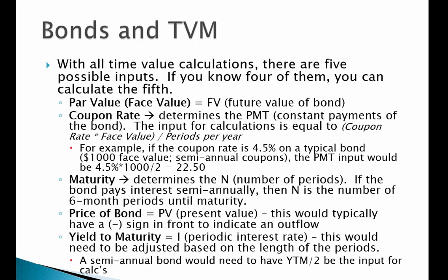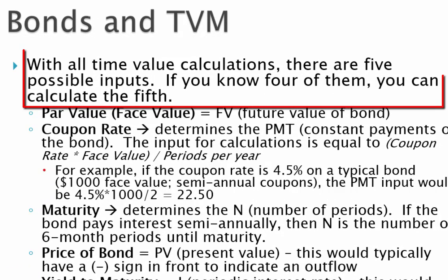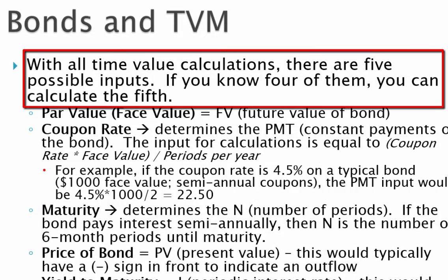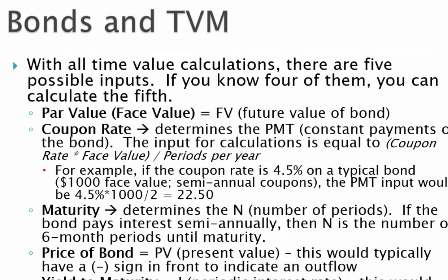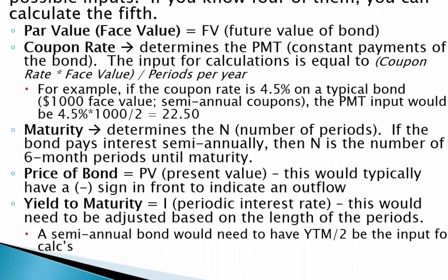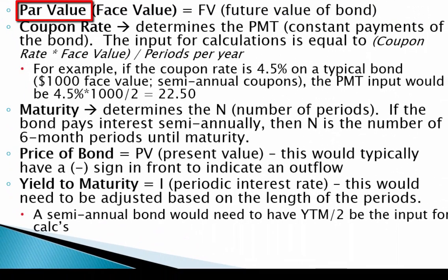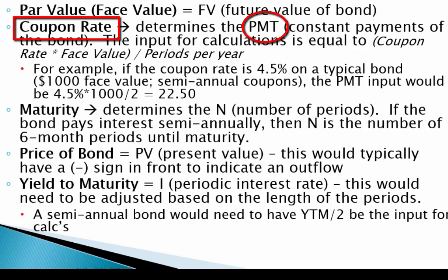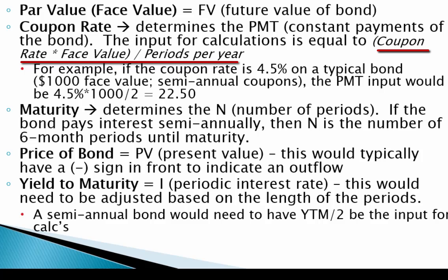Bonds are simply a time value problem applied to real life. As with all time value calculations, there are five possible inputs — if we know four of them, we can figure out the fifth. Those five inputs are: the par value or face value, which equals the future value (FV); the coupon rate, which determines the payment (PMT) — calculated as the coupon rate times the face value divided by the number of payments per year.